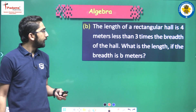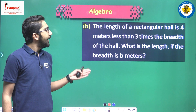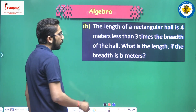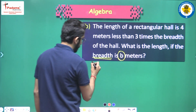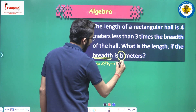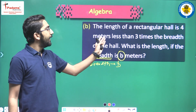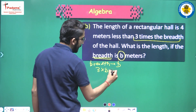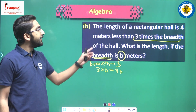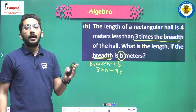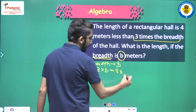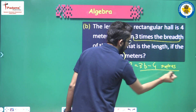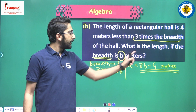Next question: the length of a rectangular hall is four meters less than three times the breadth of the hall. What is the length if the breadth is b meters? Breadth is b. Three times the breadth is three multiplied by b, which is three b. Length is four meters less than that, so length will be three b minus four meters.